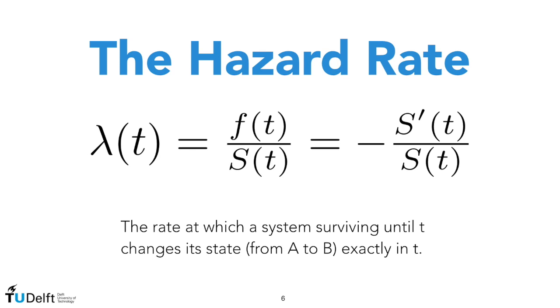Given the survival function we can define another very important quantity, the hazard rate. The hazard rate gives us the rate at which a system surviving at least until t changes its state exactly in t. Assume we are considering a company, we know that our company has survived until t, so we have seen no default for that company. The hazard rate tells us what is the rate at which that company will default exactly in t, given the survivorship until t. The hazard rate is defined as the ratio between the density f of t and the survival function s of t.